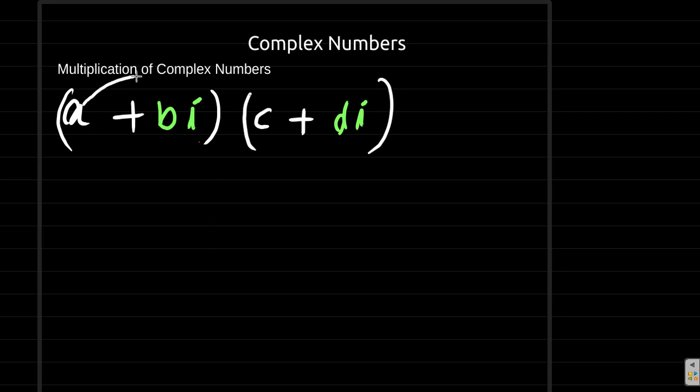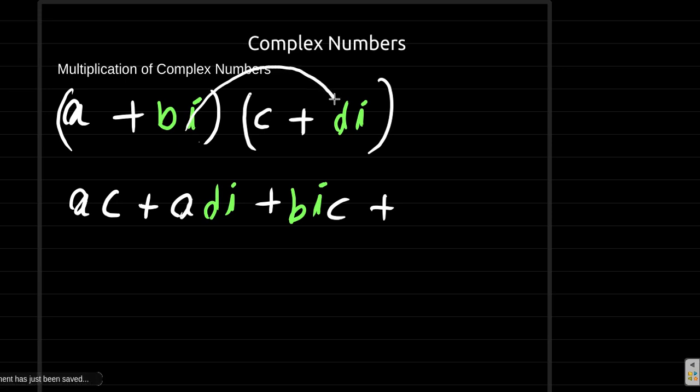So we have a times c, that gives us ac, plus a times di will give us adi, plus bi times c, so we have bic, plus and then bi times di. So we have bidi.